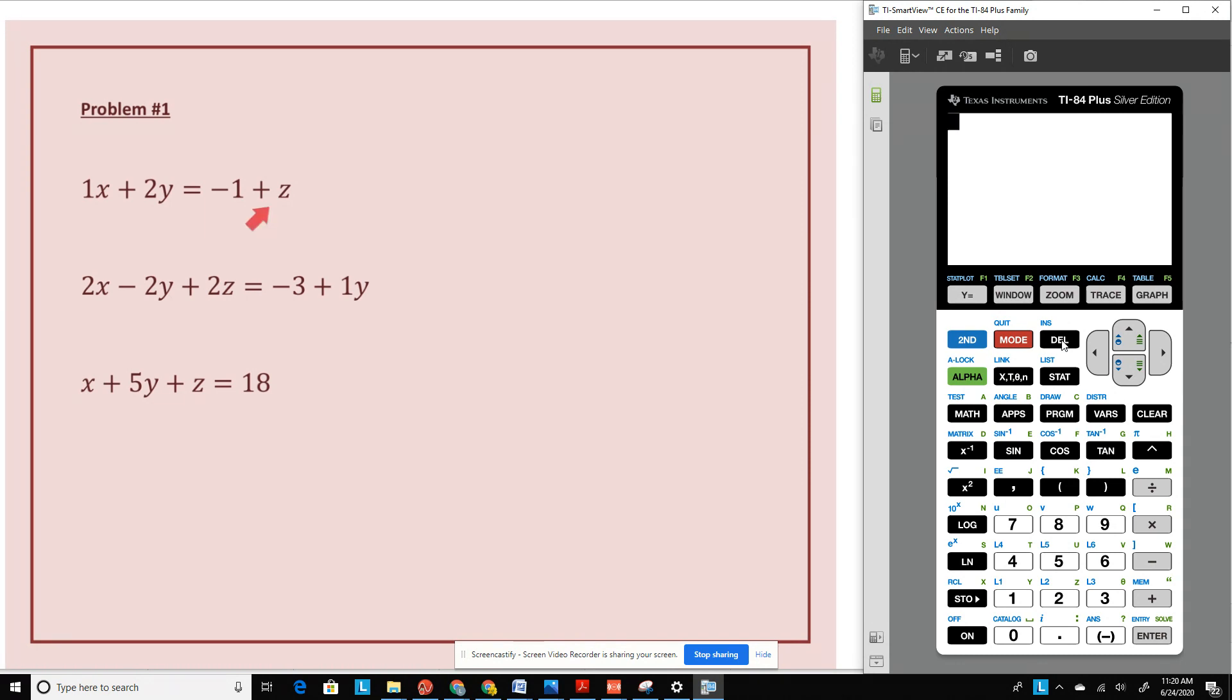On this first problem here, I have to get rid of this positive z on this side. So the way to get rid of it is to subtract z on that side. But whatever I do to one side, I must do to the other. So my first equation is 1x plus 2y minus 1z equals negative 1.